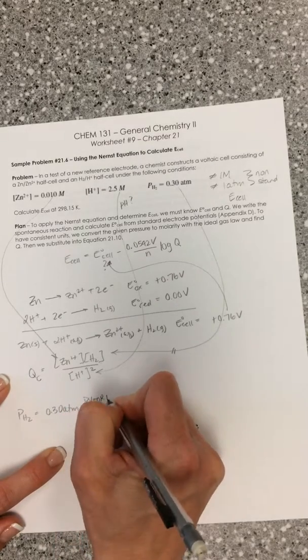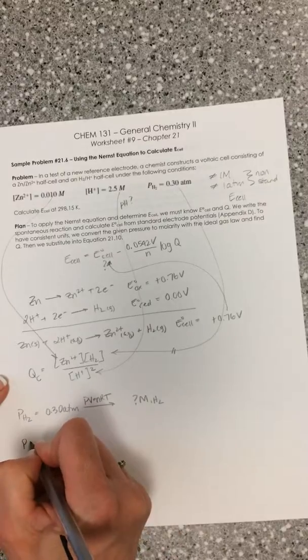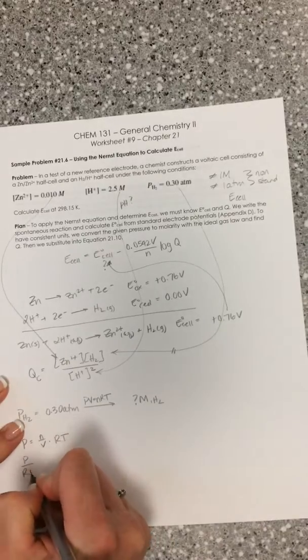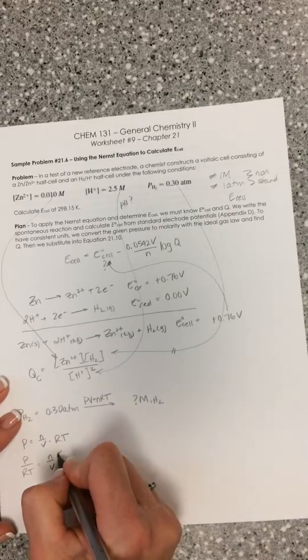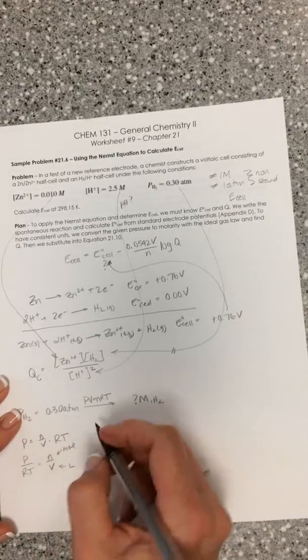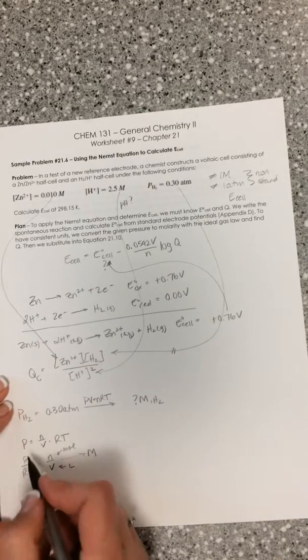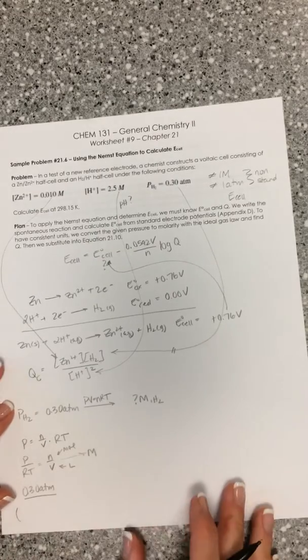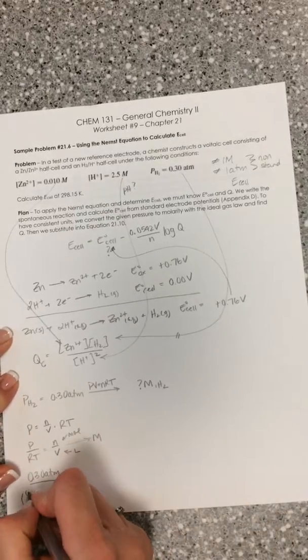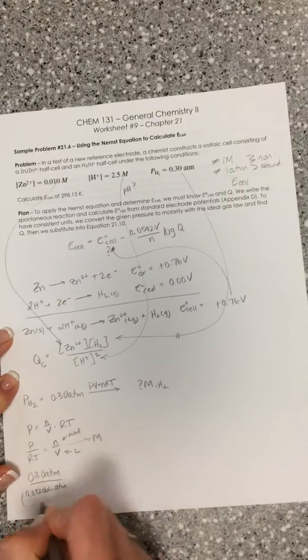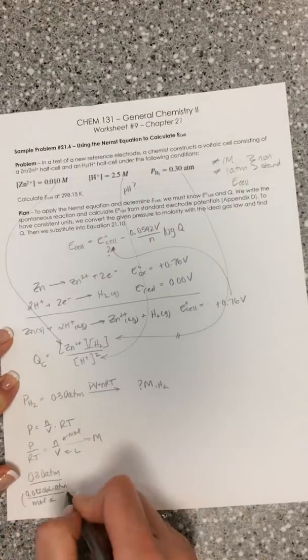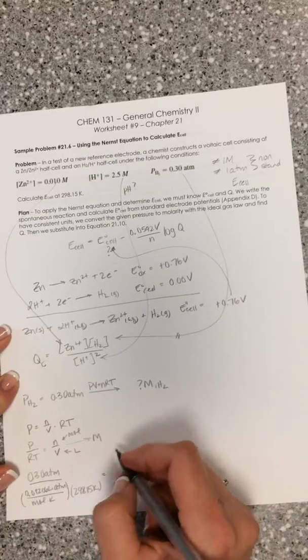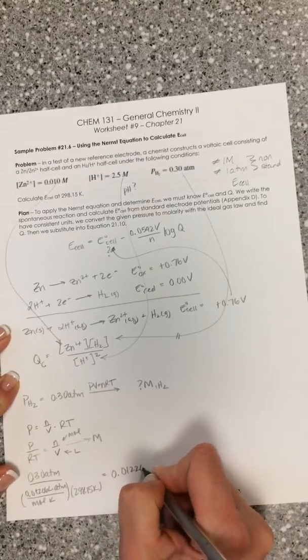Pressure is equal to N over V times RT. So if we take P over RT, that's N over V. N is moles, V is liters, so this is molarity. If we take the pressure, 0.3 atmospheres, and we divide by R. This is going to be a different R than we've been using for a bit. This is back to the old R: 0.08206 liter atmosphere per mole Kelvin. Our temperature is 298.15 Kelvin. This will equal our molarity of our hydrogen gas, which is 0.01226 molar. Now we have all the pieces to figure out what our Q is.